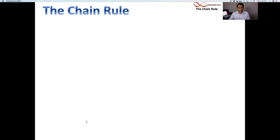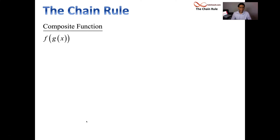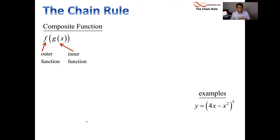How do you take the derivative of a function that is a composite function? Right now we're kind of limited in what we can actually take the derivative of. This will change the entire game. Functions inside of functions — that's the majority of the functions we actually deal with. For example, we have 4x minus x squared, all raised to the fifth.